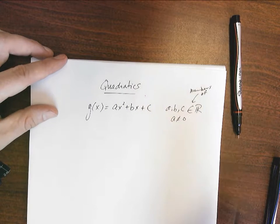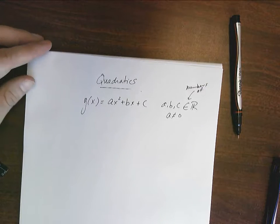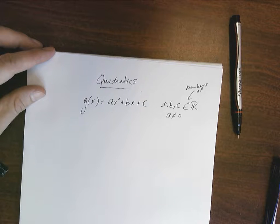And I've been yelling about it a few times. A cannot equal zero because if it does, then it's not a quadratic. It's a line and we shouldn't be doing any of this.